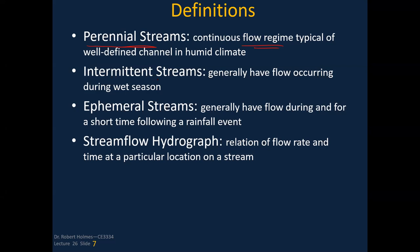An intermittent stream generally only has flow during the wet season. An ephemeral stream generally has flow during and for a short time following a rainfall event. The stream flow hydrograph is the relation of flow rate and time at a particular location on a stream. Intermittent and ephemeral streams are fairly close in their definitions.